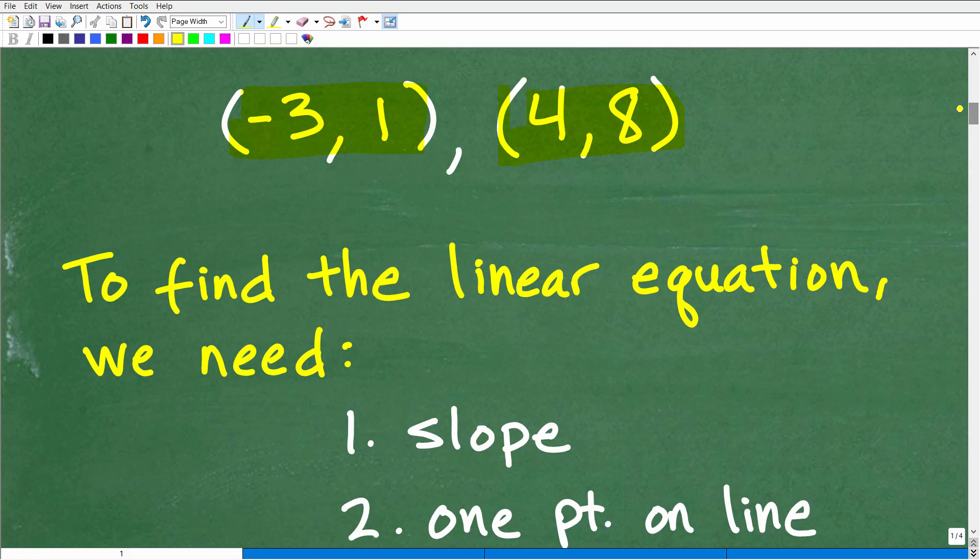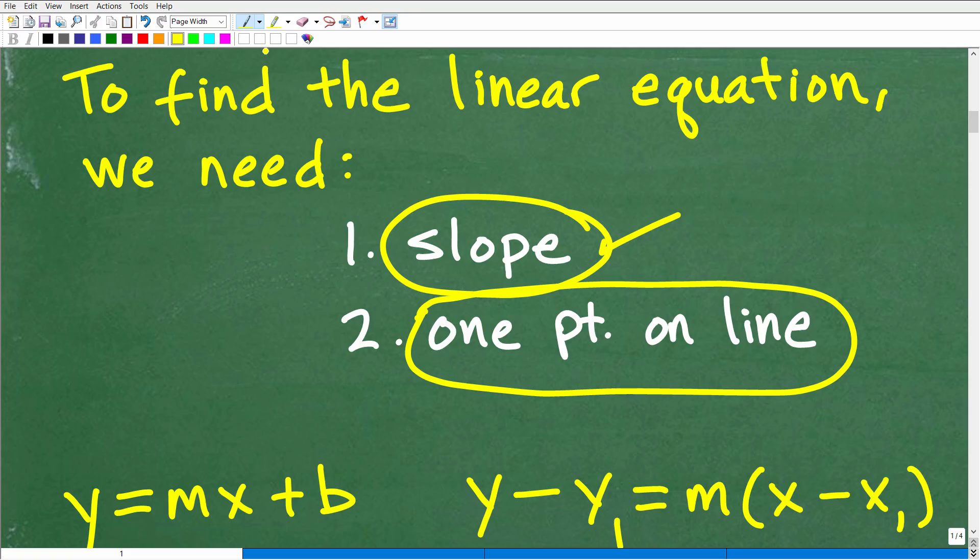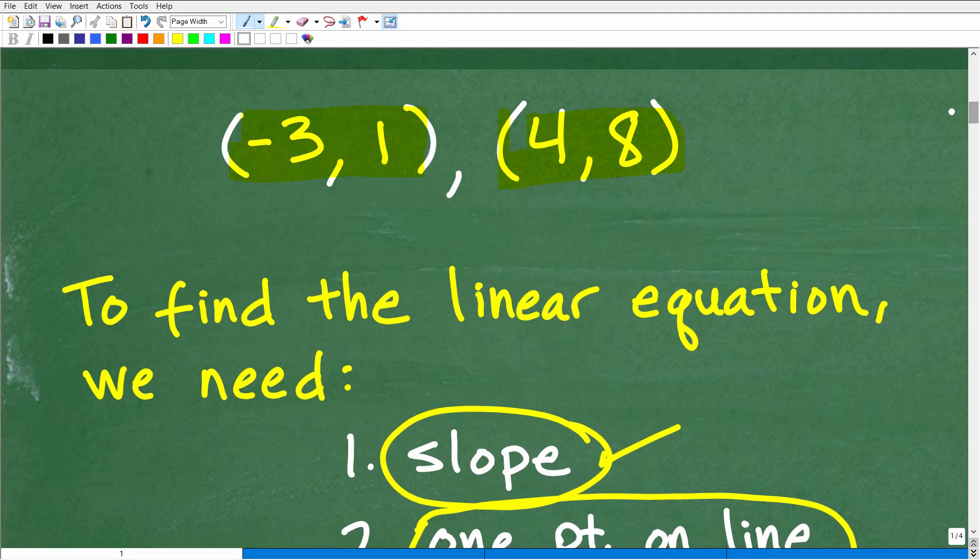Well, when you want to find a linear equation, or find the equation to any line, we always need two pieces of information. We need the slope, okay, we need the slope of that line, and we need at least one point that's on that line. So with this particular problem, what we have is two points that are on that line, but we do not have the slope. But is that a problem? No, because if we have these two points, we can calculate the slope.